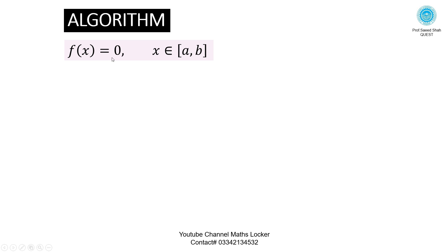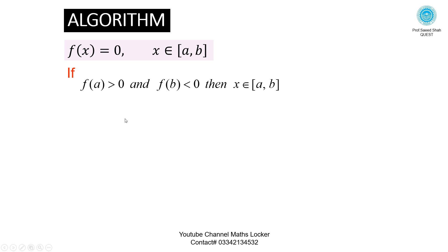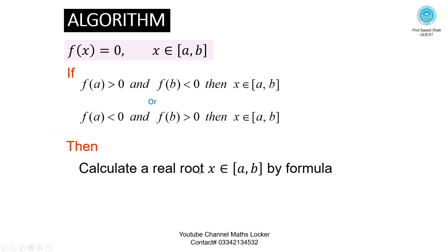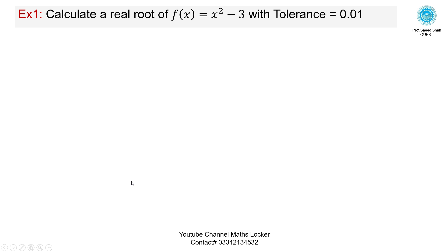We have equation f(x) = 0, x in interval [a, b]. If f(a) > 0 and f(b) < 0, then the root lies in [a, b]. We calculate the real root using the formula: xₙ₊₁ = xₙ - f(xₙ) / f'(xₙ). Exercise 1: Calculate a real root of f(x) = x² - 3 with tolerance 0.01.